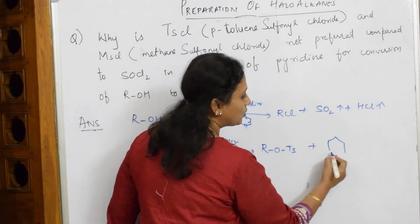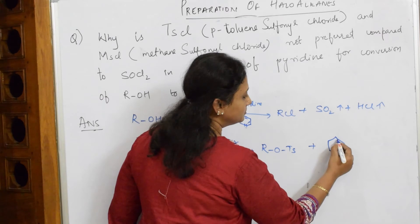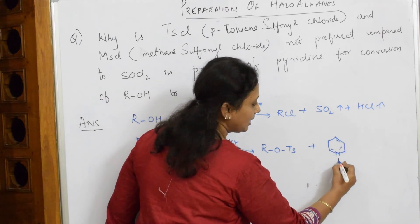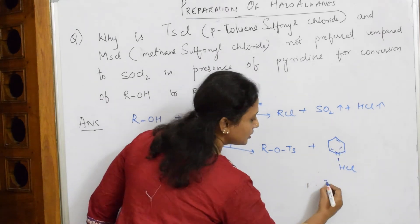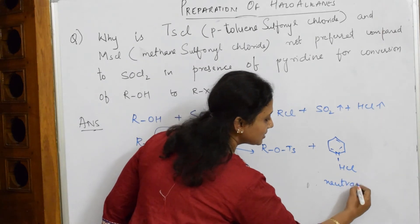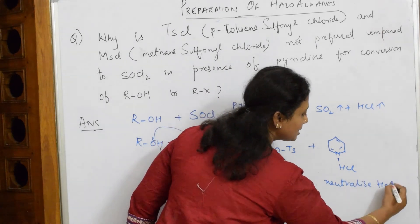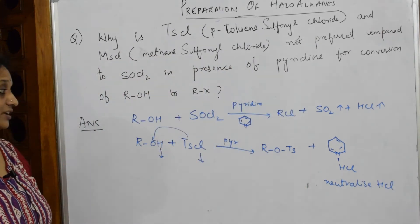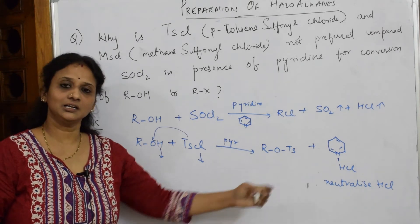It becomes the pyridine ring with N and HCl. This is going to neutralize HCl. It immediately neutralizes HCl. So are we getting the required product RCl? No.